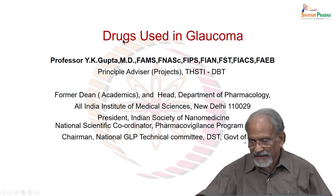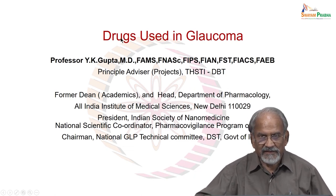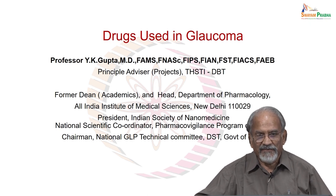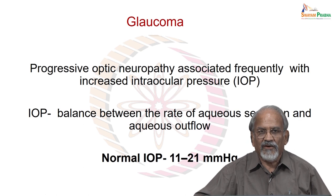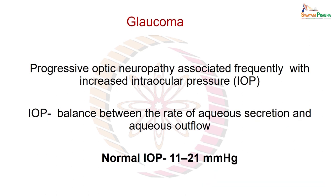This is the talk on what drugs can be used for management of Glaucoma. What is Glaucoma? It is primarily the progressive optic neuropathy which is associated frequently with increased intraocular pressure. However, the intraocular pressure may be normal, which is called normal pressure glaucoma, or it can sometimes be even less pressure, which is called low pressure glaucoma.